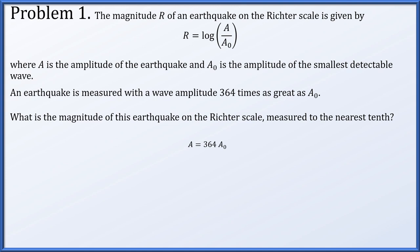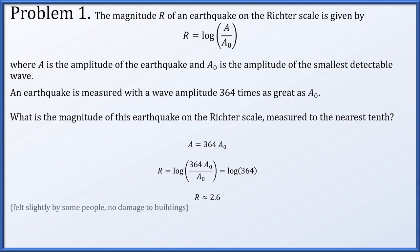By the definition given at the beginning of the problem, the measurement on the Richter scale is therefore the log of A over a0. The a0s cancel, and we simply have the common logarithm of 364. All we have to do now is plug this into a calculator and round off to the nearest tenth. It's about 2.6.